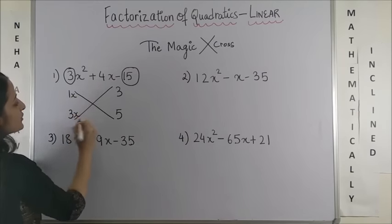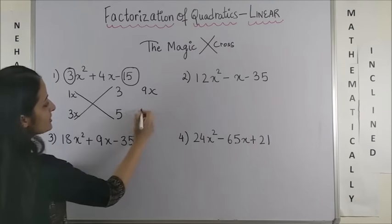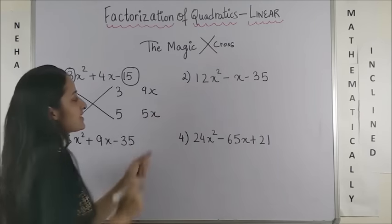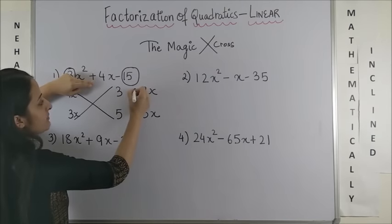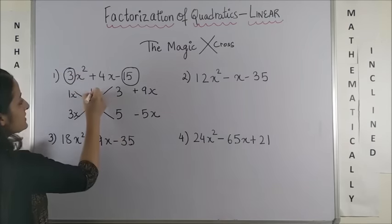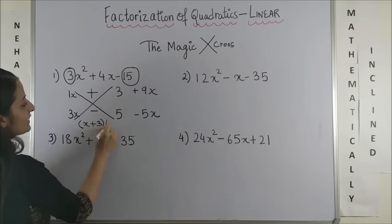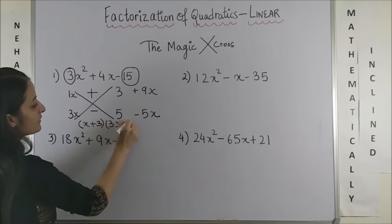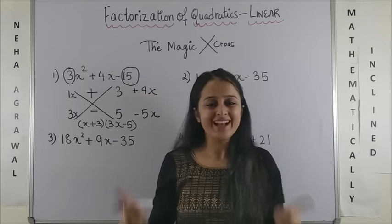Keep in mind, here you had x. So, when you cross multiply, this becomes 9x. When you cross multiply, this becomes 5x. Now, just check out what is the sign you require overall. You need plus here and minus here. The same signs come over here and your factor is x plus 3 and 3x minus 5. Wow! Wasn't that super simple? Have a look.